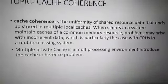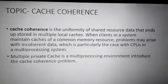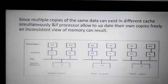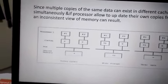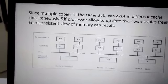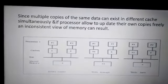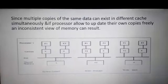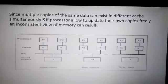Multiple private caches in a multiprocessing environment introduce the cache coherence problem. Processor ki own memory jisko hum cache bolenge, aur yeh jo connected hai shared memory se, woh through the bus connected hai. Jab data cache aur shared memory mein same hai, jaise figure mein yahan show ho raha hai ki cache mein data hai x aur shared memory mein data x, toh data consistent hai.